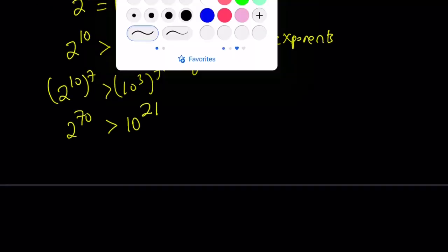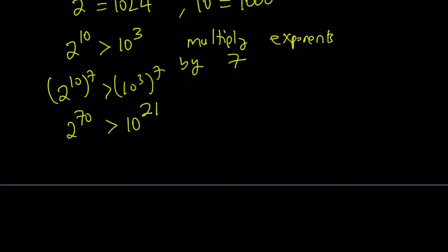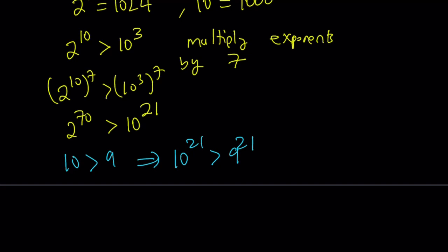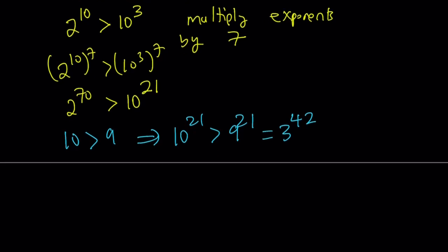So how do we get to a power of 3 from 10 to the power 21? Here's the next part. We know that 10 is greater than 9, which means 10 to the power 21 is greater than 9 to the power 21. And 9 is a power of 3, therefore we can write it as 3 squared. So 9 to the power 21 can also be written as 3 to the power 42. And 3 to the power 42 is greater than 3 to the power 41.